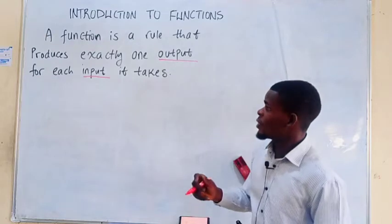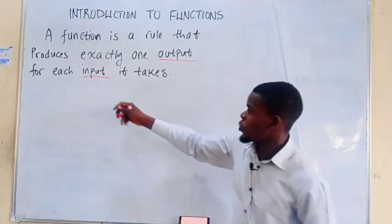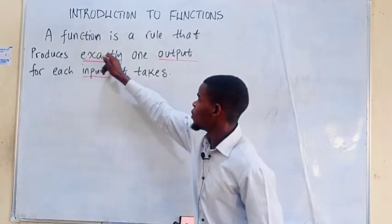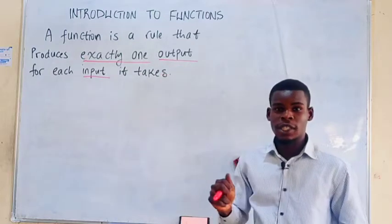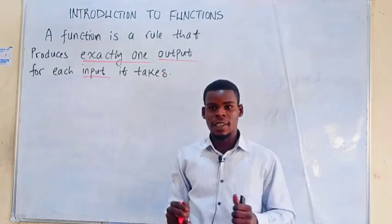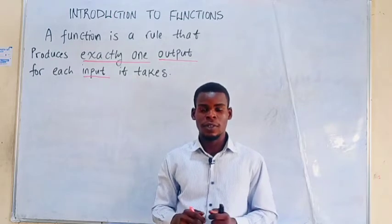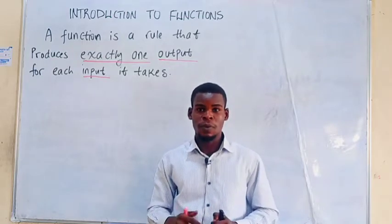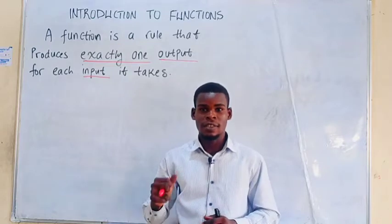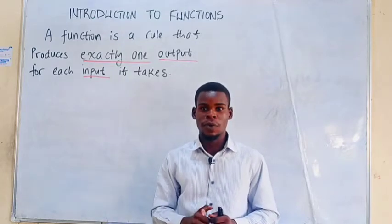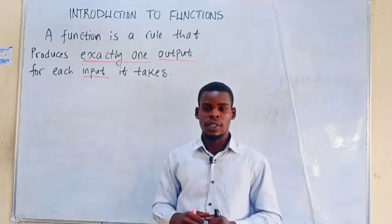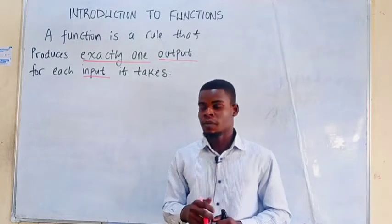Another thing we should notice here is that it is a rule that produces exactly one output for each input. That is, if you plug something in, it gives you exactly one output, not more than one and not less than one, provided you plug something in. Such a rule is called a function.